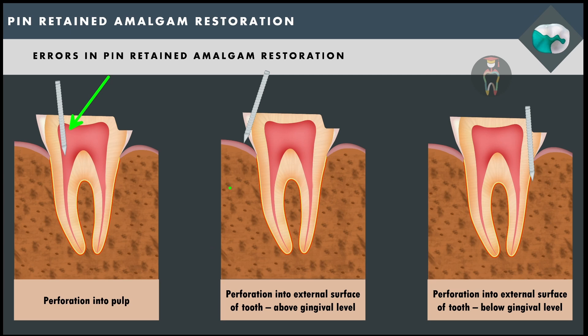Other errors include perforation into the pulp chamber during pin channel preparation, and perforation to the external tooth surface either above or below the gingival level. If perforation is supragingival, the gingiva can be reflected, the perforated area exposed, and if needed a small cavity can be prepared and filled with dental amalgam. If the pin accidentally enters the pulp chamber, it can be treated like a mechanical pulp exposure — applying calcium hydroxide paste or MTA — and the pin can then be placed.